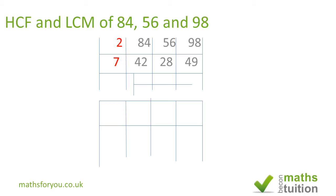The next prime number that is a factor common to all three numbers is 7. If we divide 42 by 7 we get 6, 28 by 7 we get 4, and 49 by 7 we get 7. Now 6, 4, and 7 don't share a common factor across all three, but 6 and 4 have a common factor of 2, so we divide 6 and 4 by 2 to get 3 and 2, and bring the 7 down.